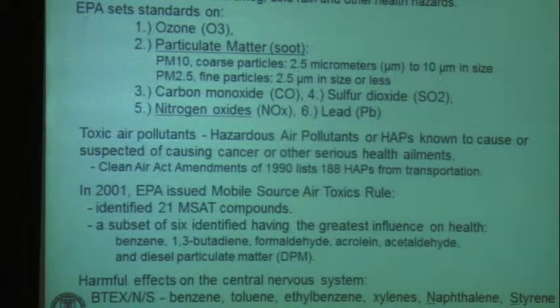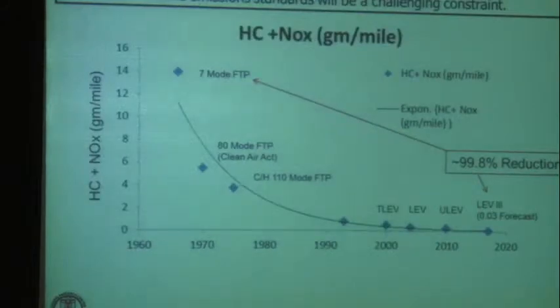Benzene is a big one that people are concerned about because of health implications. The dienes, aldehydes, and particulate matter has really been the focus of a lot of legislation. Some of these things that appear in engine exhaust have effects on the central nervous system—the BTECs, benzene, toluene, xylenes, the aromatic compounds. So they're bad news and really need to be addressed. However, most of the concern recently has been in nitric oxides and soot.